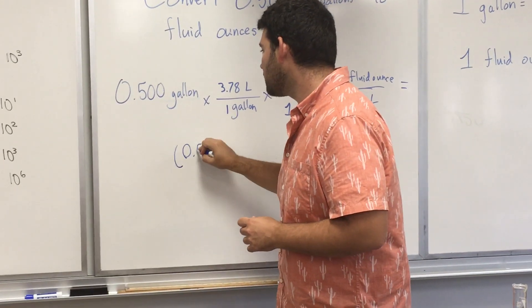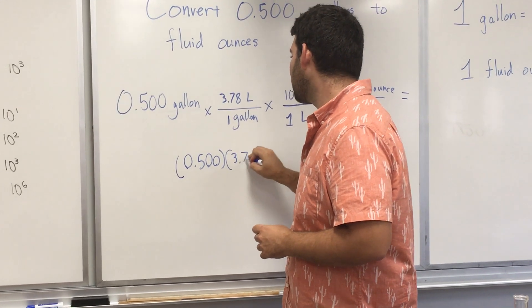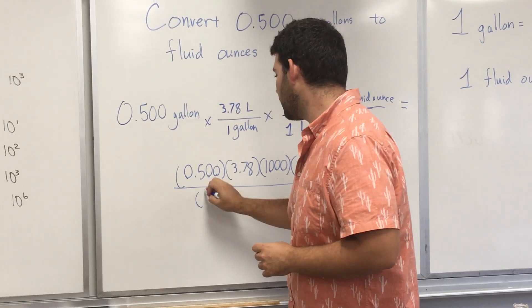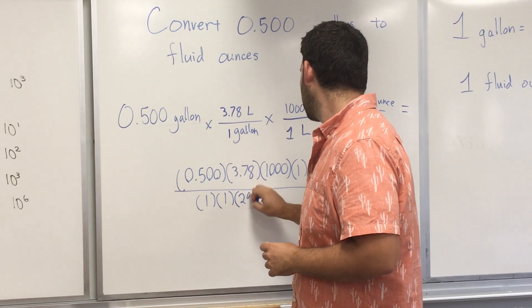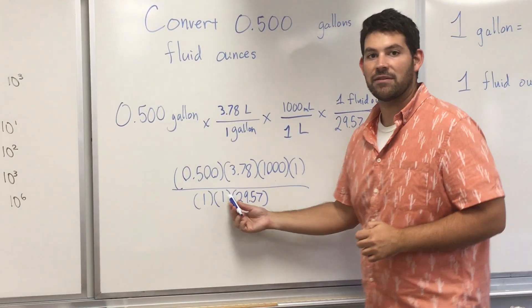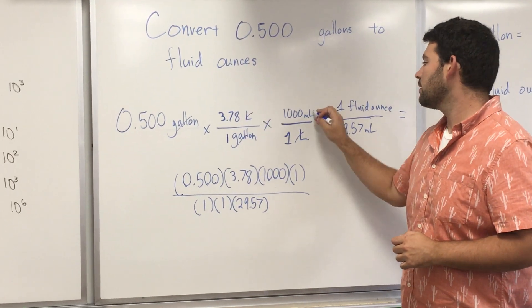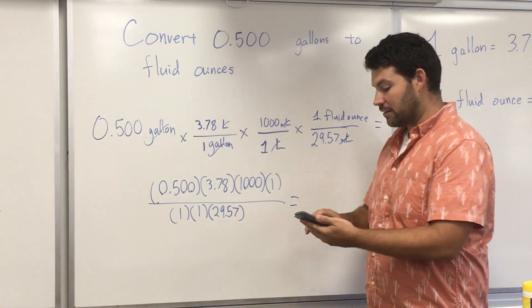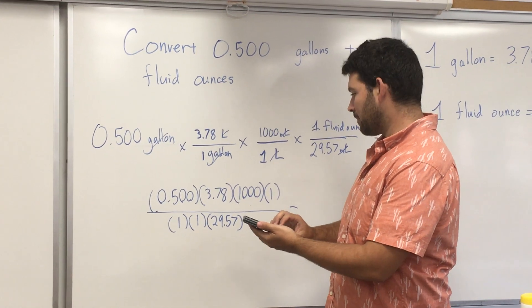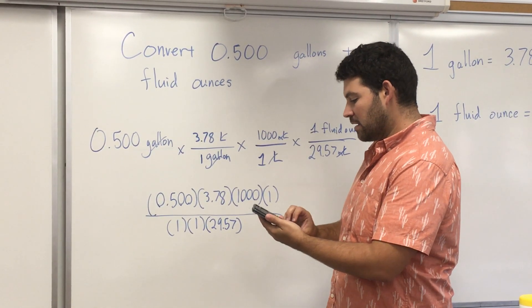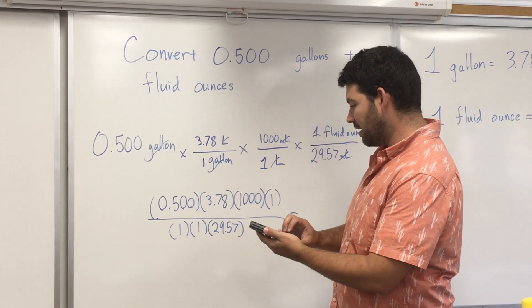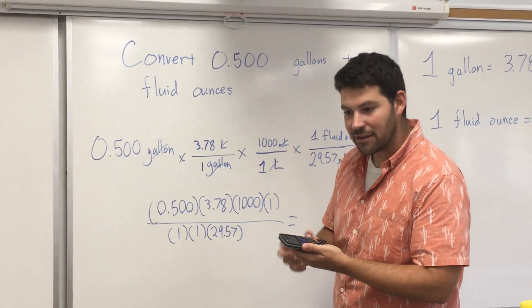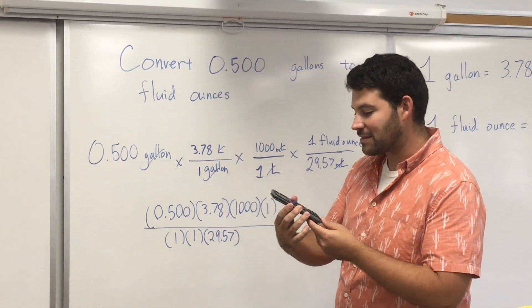So I'm just going to set up the math. 0.500 times 3.78 times 1,000 times 1, divided by 1, times 1, times 1, times 29.57. I know the gallons cancel, the liters cancel, the milliliters cancel, and I'm left with fluid ounces. So now all I have to do is plug this into the calculator. So 0.5 times 3.78 times 1,000 is 1890, and I'm going to divide that by 29.57, and I get an answer.